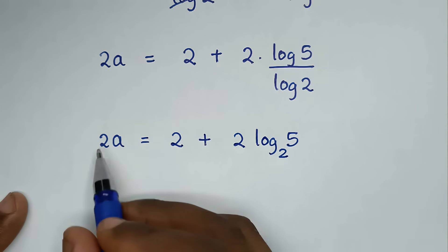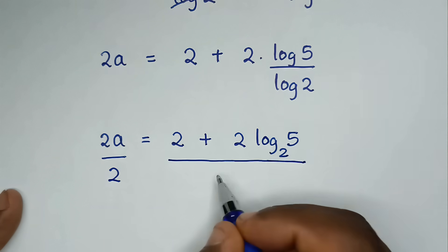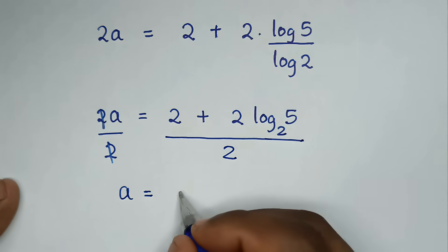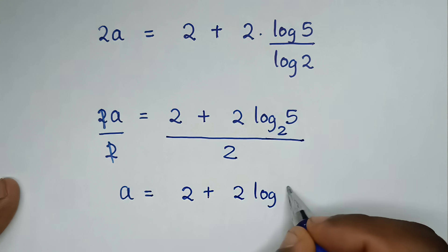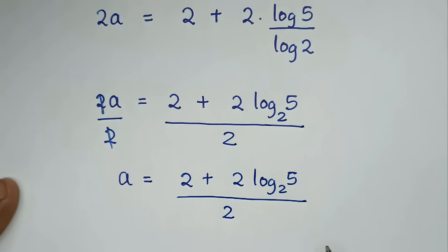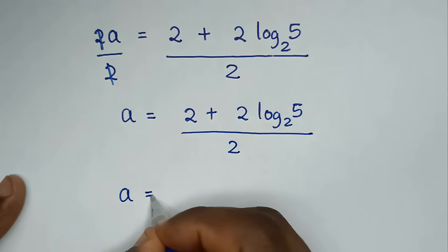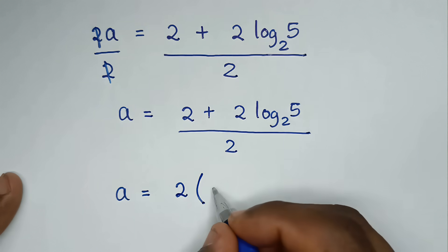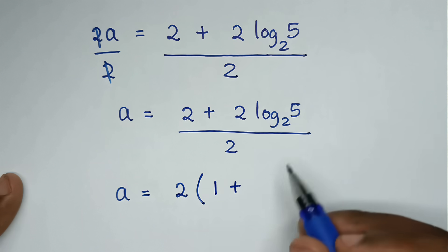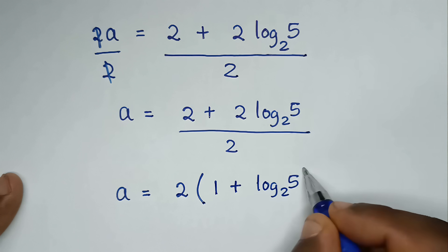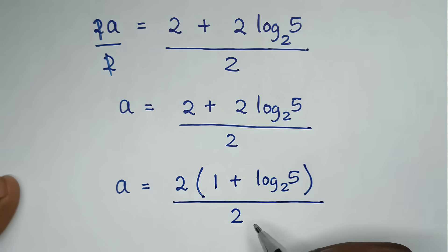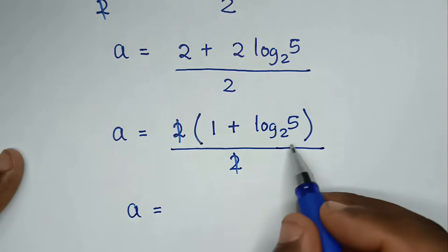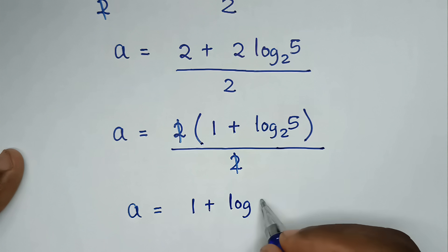Then we divide both sides by 2, so the 2 on the left cancels. It will be a is equal to (2 plus 2 log base 2 of 5) over 2. Then 2 is common, so we take 2 out of the bracket: 2 divided by 2 is 1, so a is equal to 1 plus log base 2 of 5.